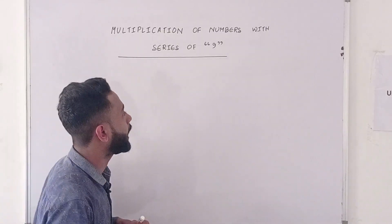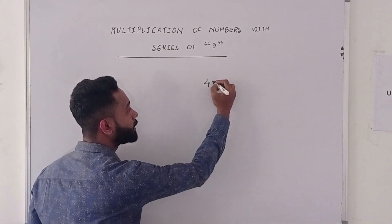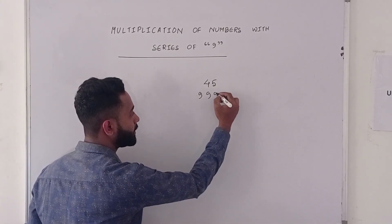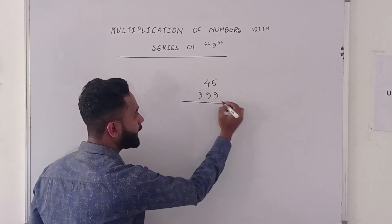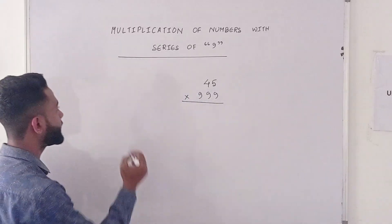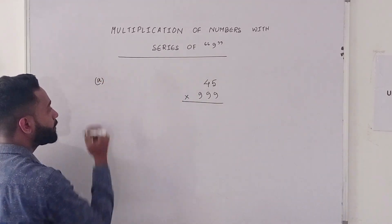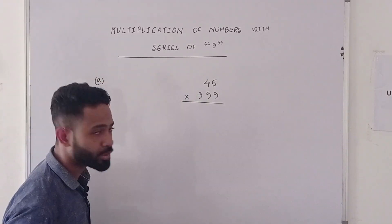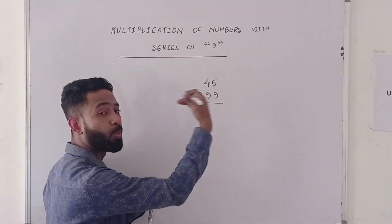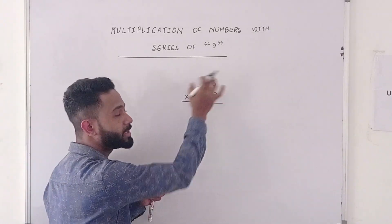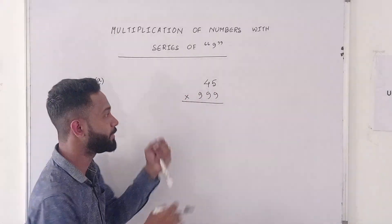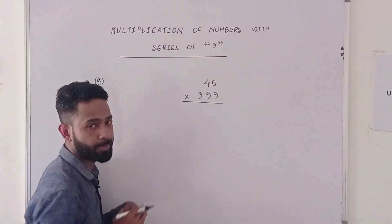Suppose I have 45 multiplied by 999. In this case, let us take it as Case A, where the number of digits in the series of 9s is more than the number of digits in the number being multiplied.